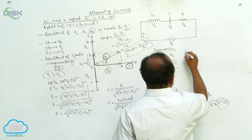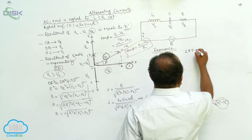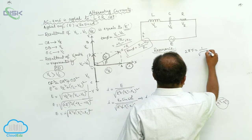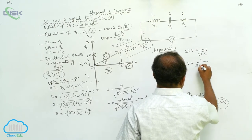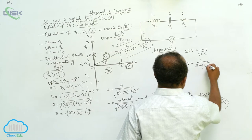Omega equals 2 pi nu. 2 pi nu equals square root of 1 by LC. Nu equals 1 by 2 pi square root of LC.